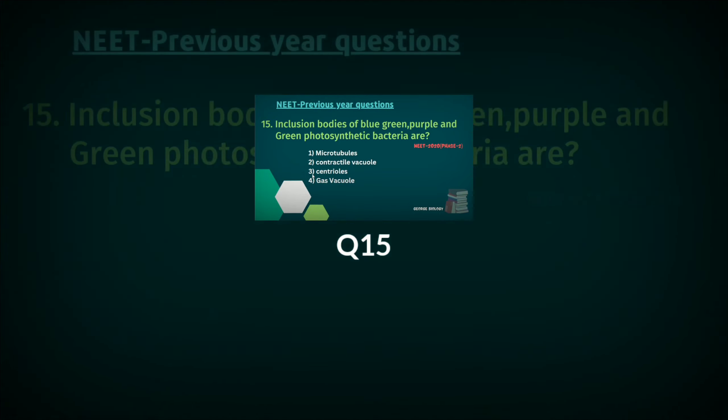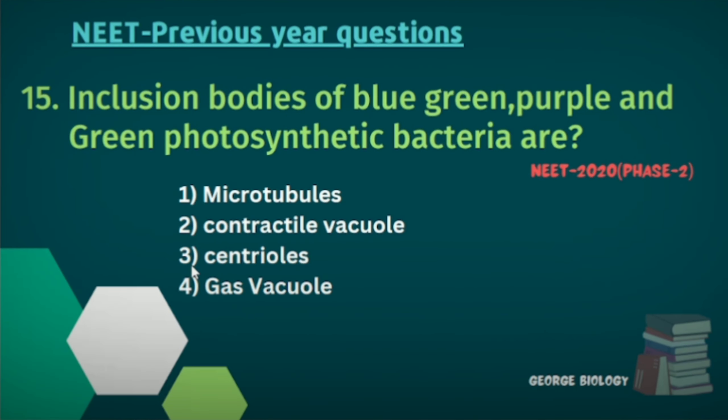Question fifteen: Inclusion bodies of blue-green, purple, and green photosynthetic bacteria are — microtubules, contractile vacuole, centrioles, or gas vacuole?